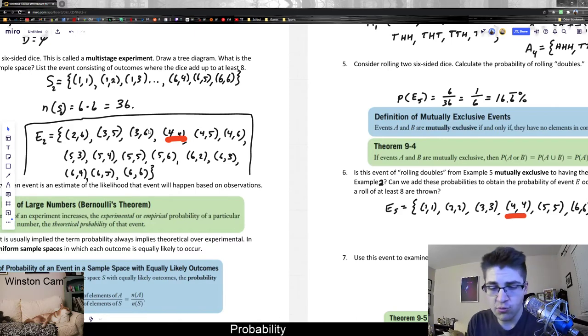And you could even, what you could do is actually write out the intersection as kind of proof that they're not mutually exclusive. So if we did, well, what's the intersection of E2 and E5? That would be all the common elements. So 4, 4 is in the intersection of those two sets.